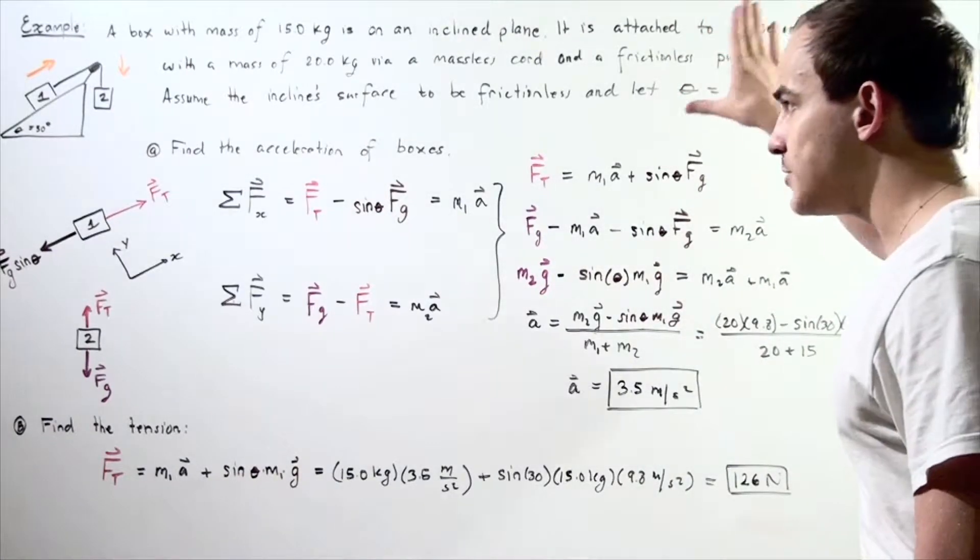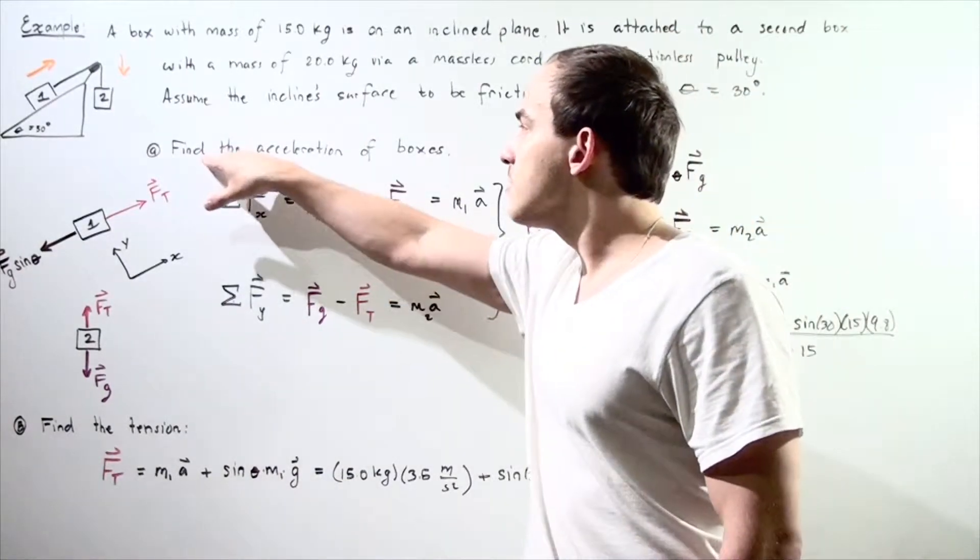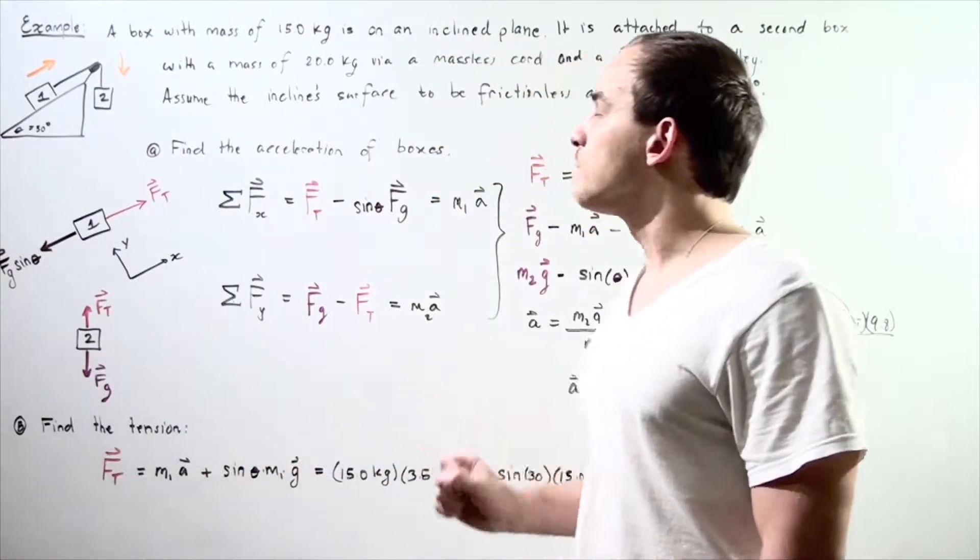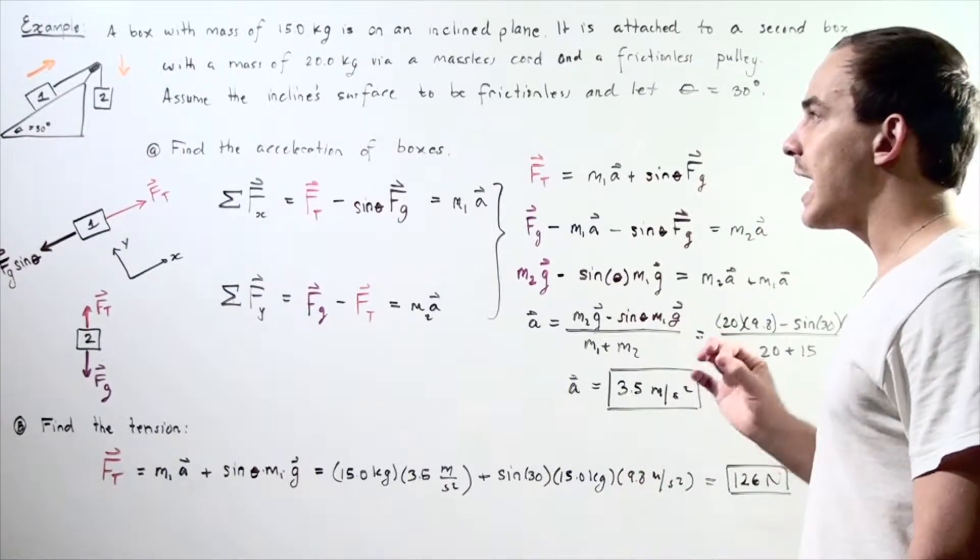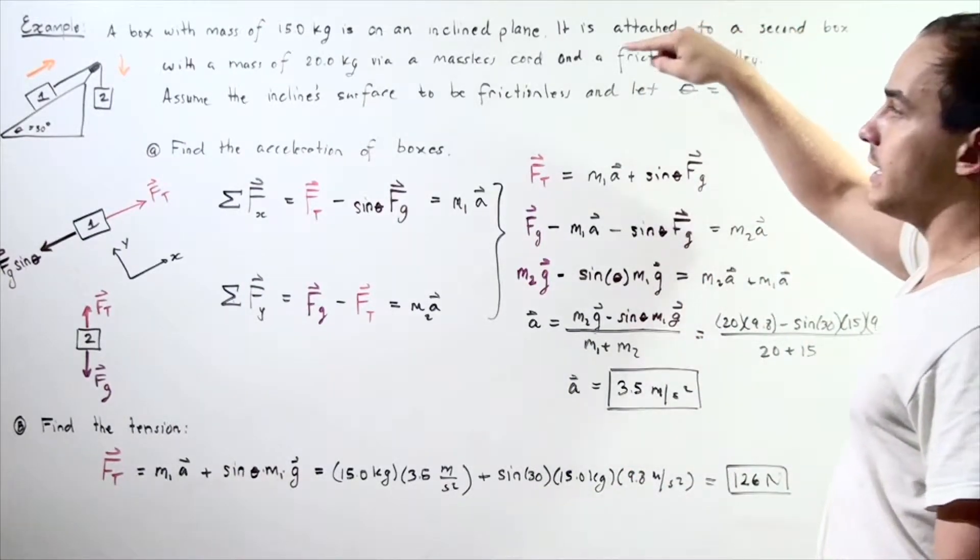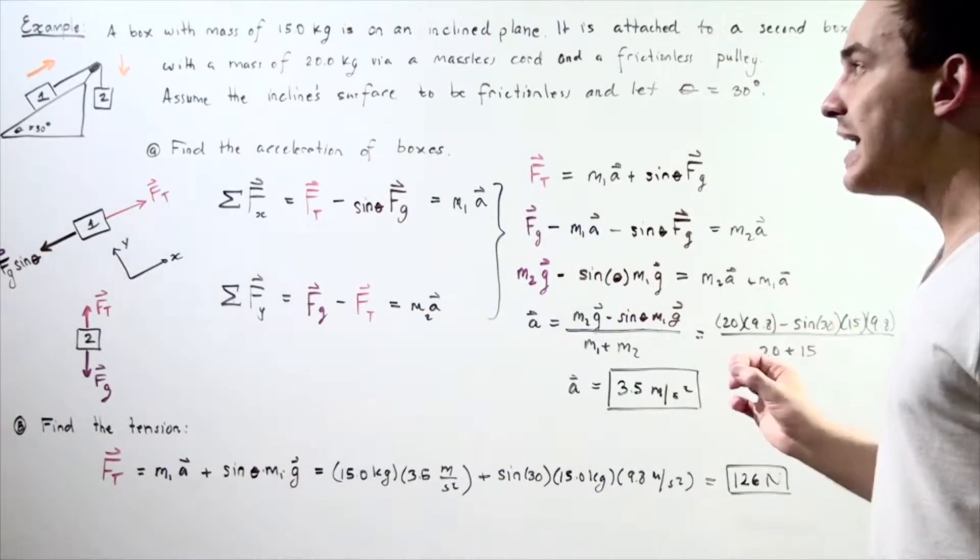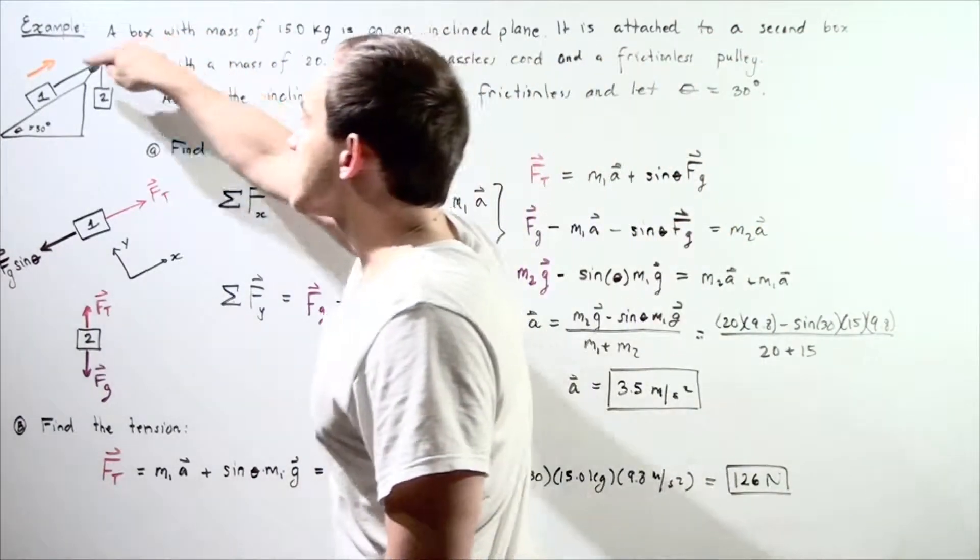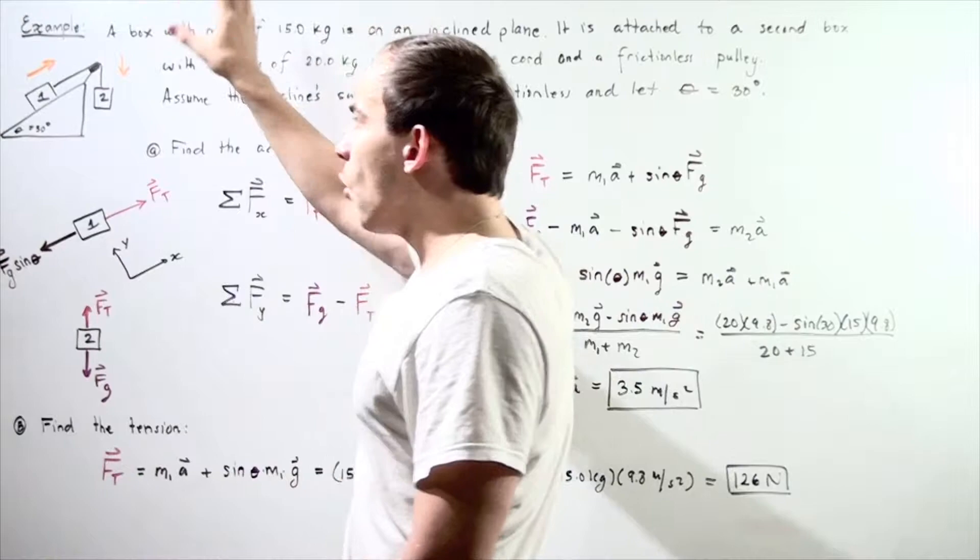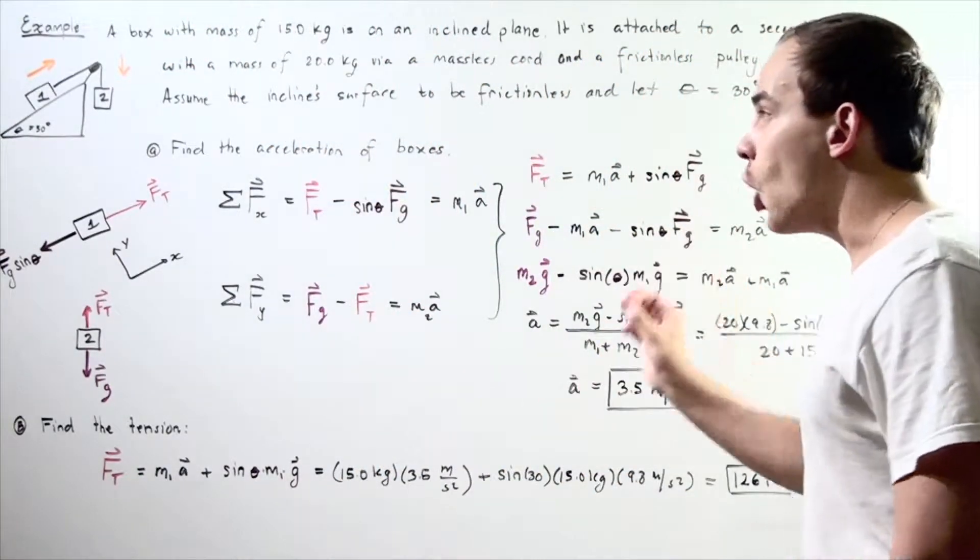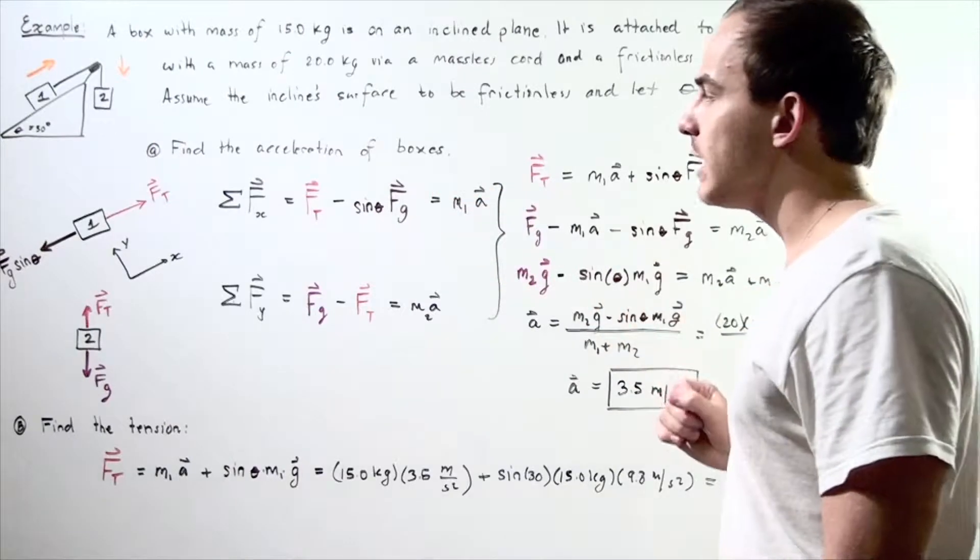Knowing this information, find A, the acceleration of the boxes and B, the tension in our cord. Now, we make the assumption that our pulley is frictionless and that our cord is massless. That means the force along any point in the cord is exactly the same. It does not change. Now, knowing this information, let's find part A.